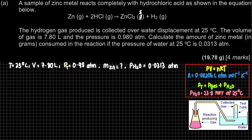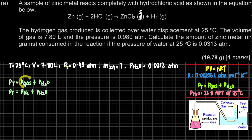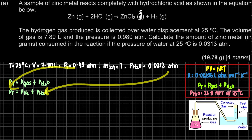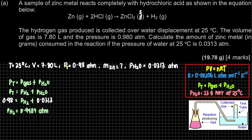When using the water displacement method, we apply P_total = P_gas + P_H₂O. In this case, our gas is hydrogen. Since all units are consistent, we substitute directly: P_H₂ = P_total − P_H₂O = 0.98 − 0.0313 = 0.9487 atm. That is the first step when dealing with the water displacement method.